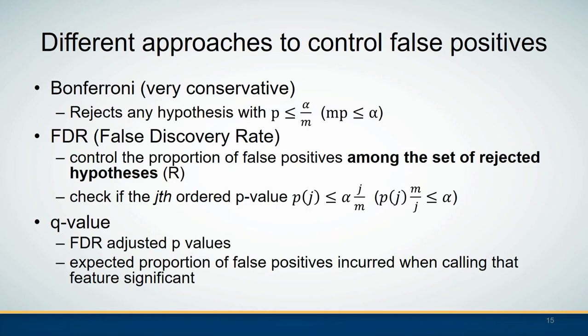A second correction method is False Discovery Rate (FDR), which controls the proportion of false positives among the set of rejected hypotheses. In practice, it rejects a hypothesis when the p-value is less than the significance level divided by the number of hypothesis tests, times the number of positive hypothesis tests. The adjusted significance level is larger than the Bonferroni method, so the adjusted p-value would be smaller than the Bonferroni-adjusted p-value, making it less conservative.